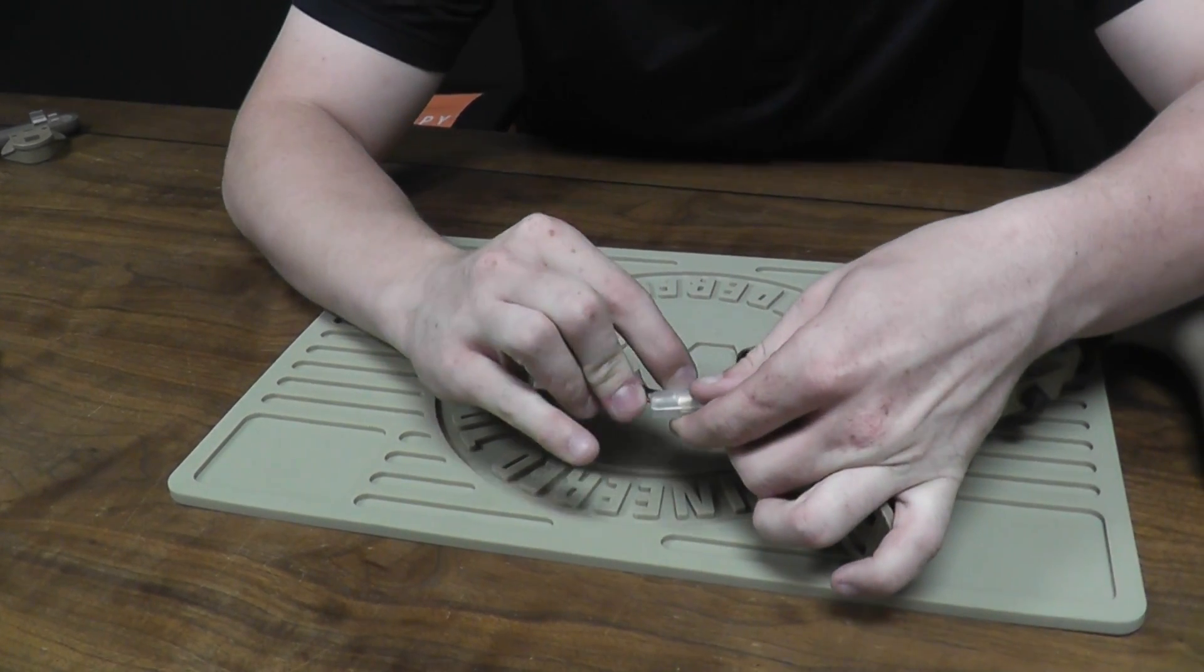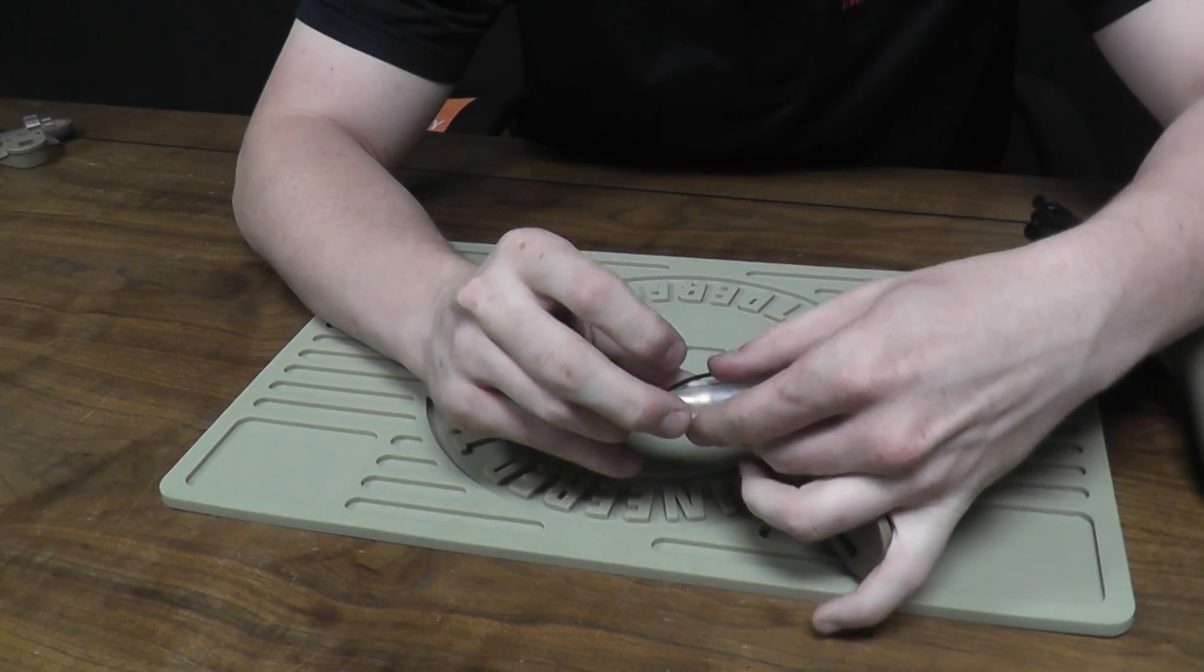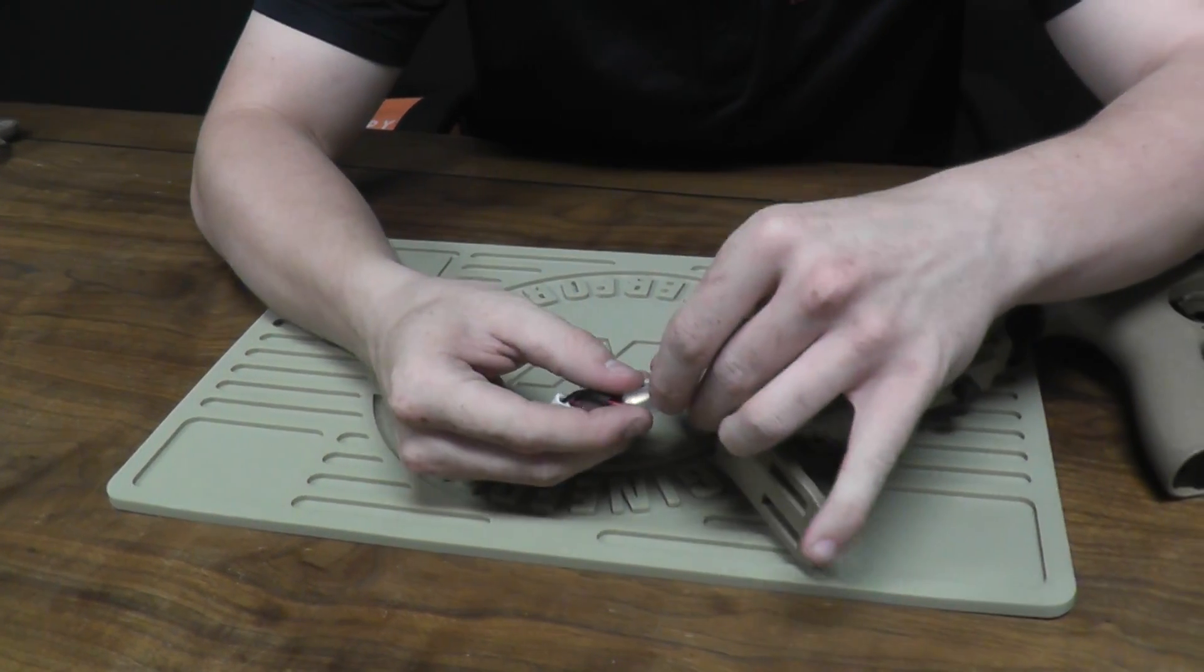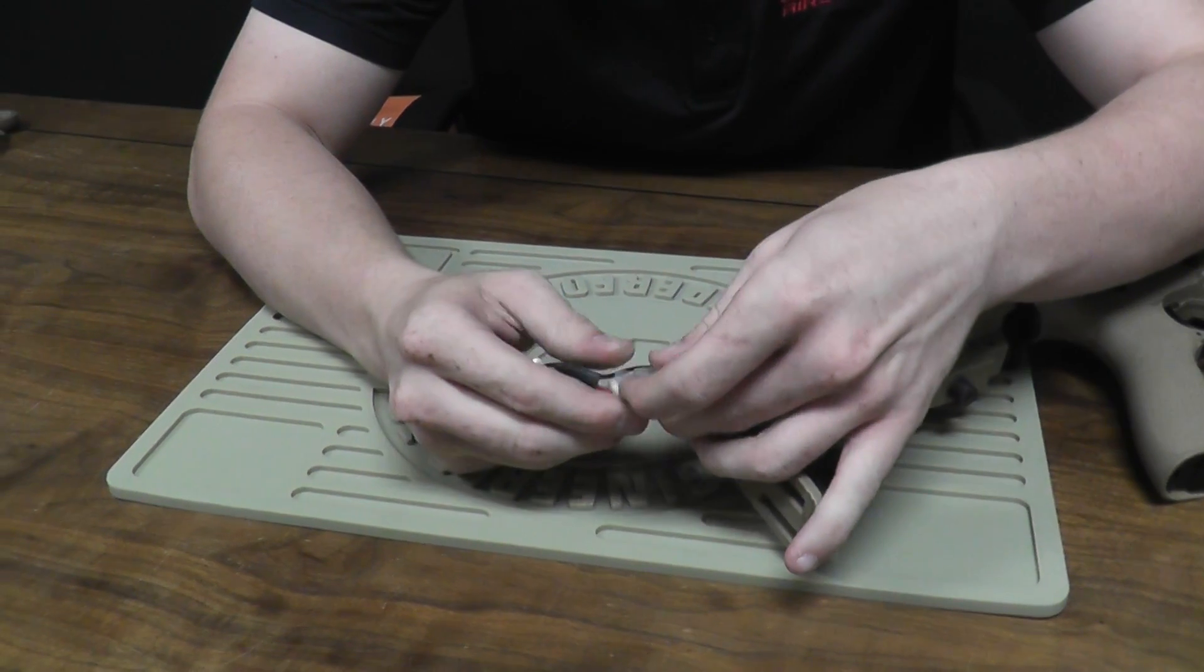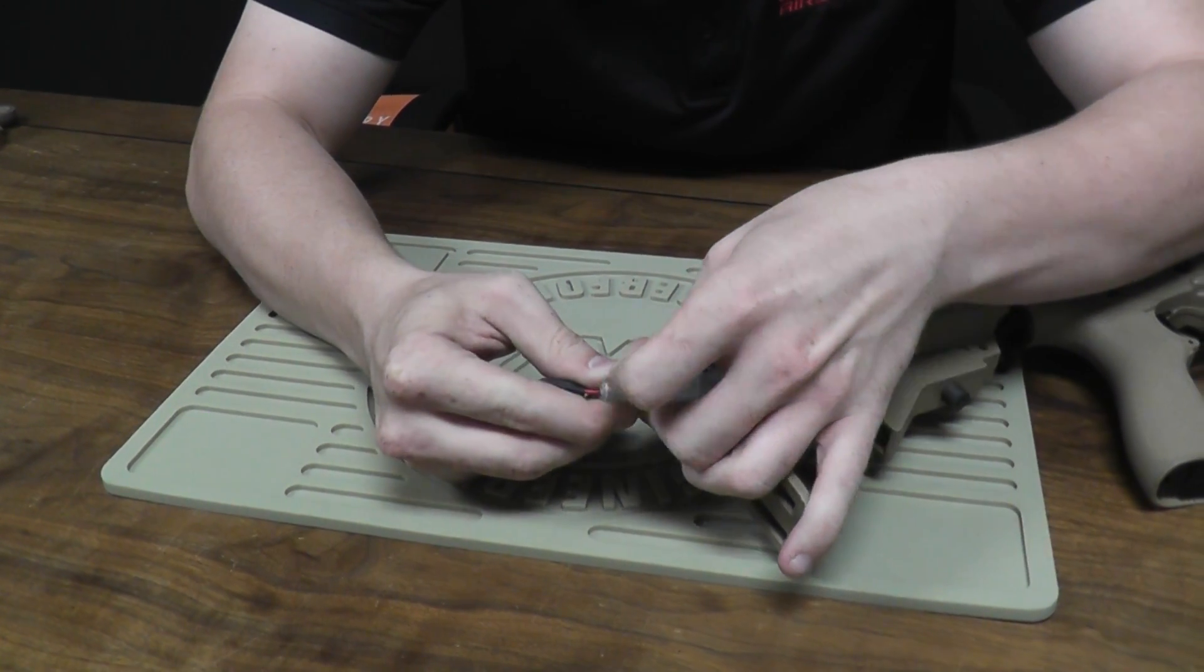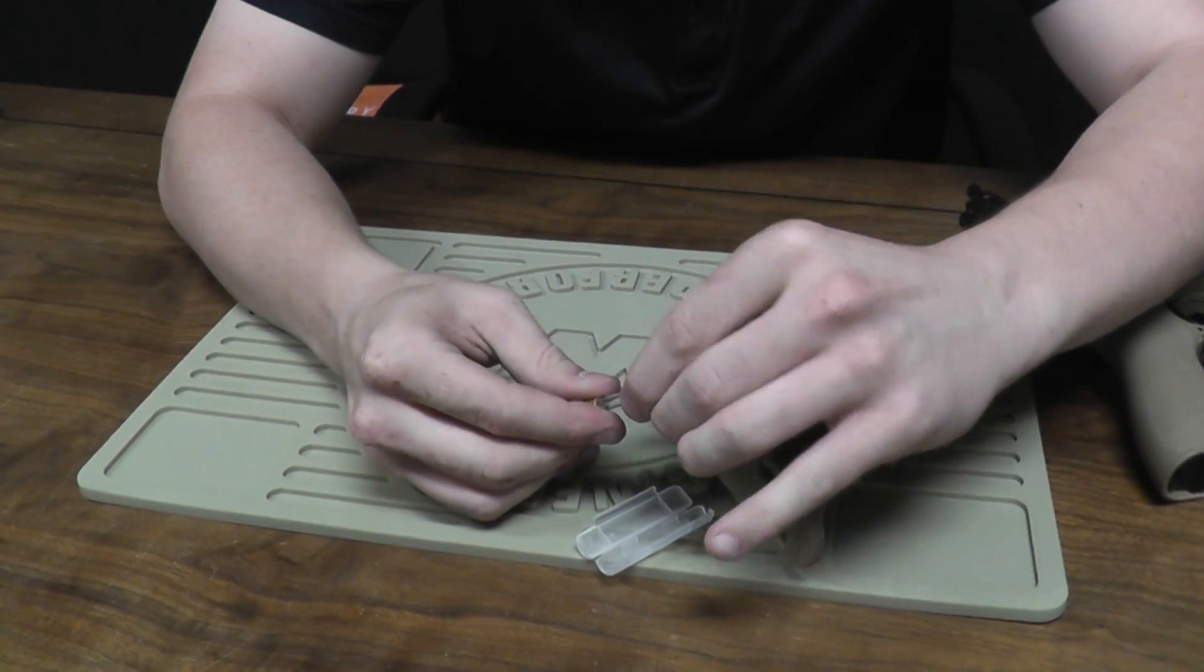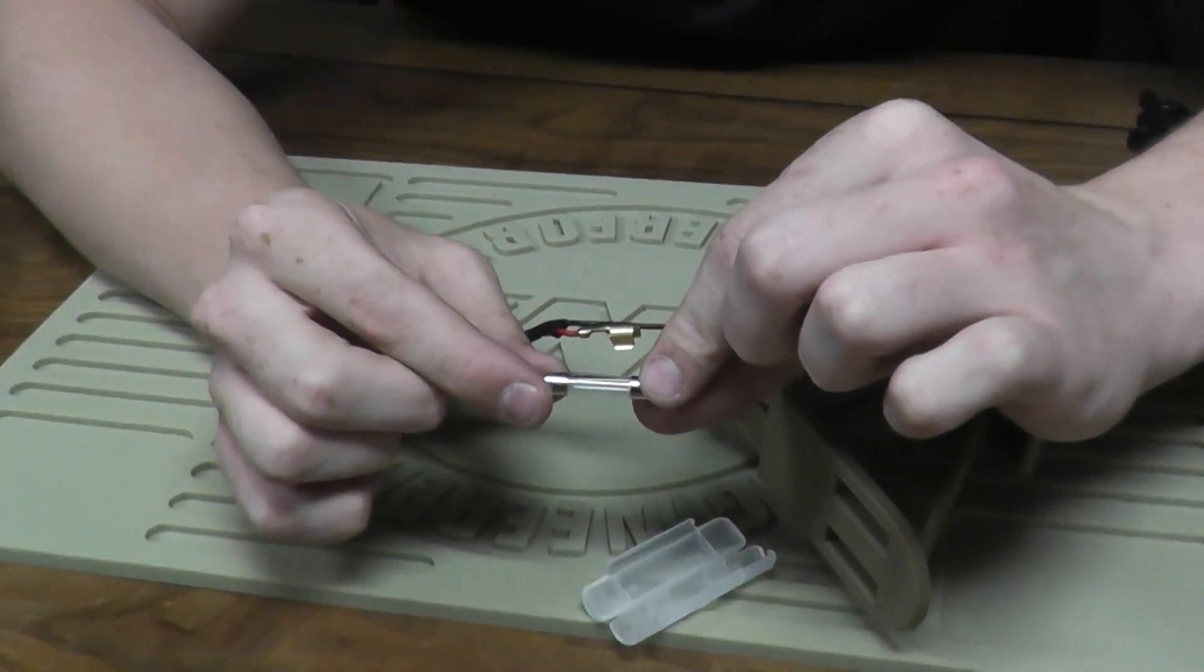The next most common thing, and actually probably the most common thing we get is the fuse. Fuses come in most guns nowadays I'd say, with the exception of a few. Fuses are not always encased in something like this. They don't always look like this either. But regardless of what your gun has, a lot of times it will have a fuse.